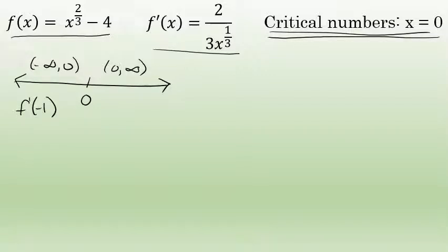For any x-value between negative infinity and zero, if you plug that value into the derivative and get a positive number, that means the function's graph is increasing over the entire interval. If you plug a number from negative infinity to zero into the derivative and get a negative number, that means the graph is decreasing over that entire interval.